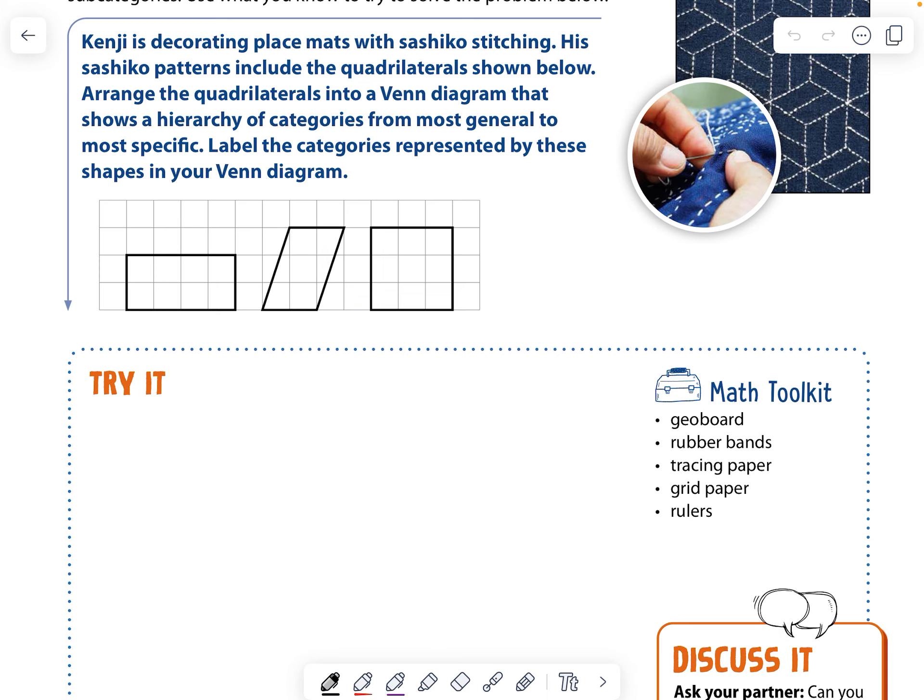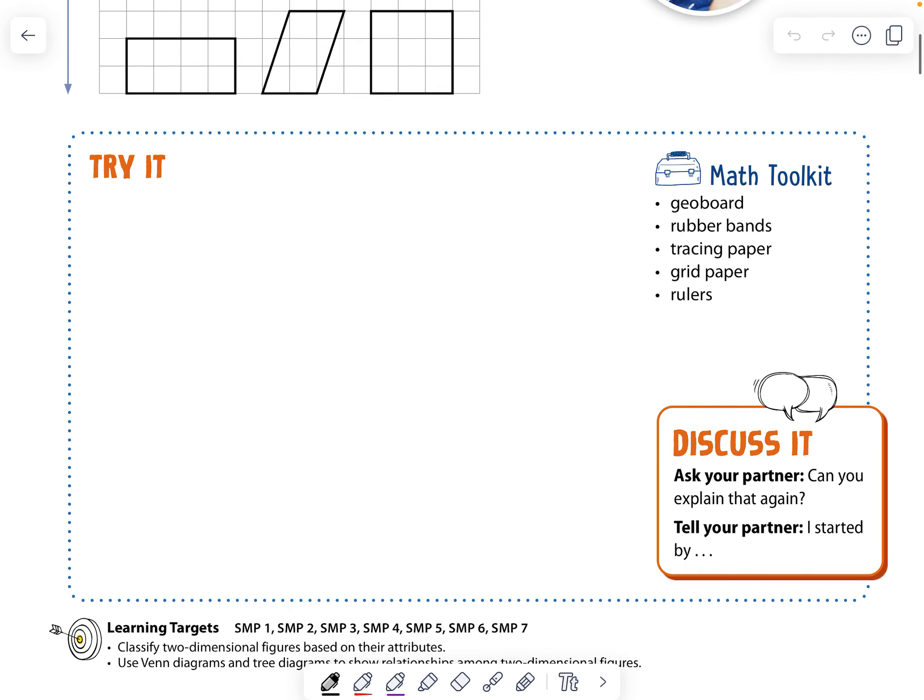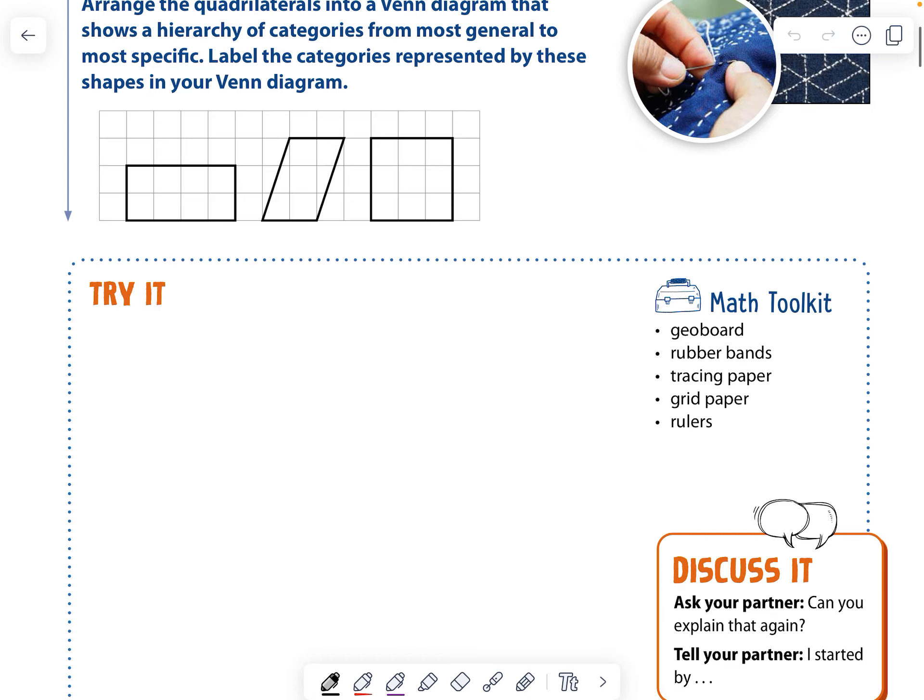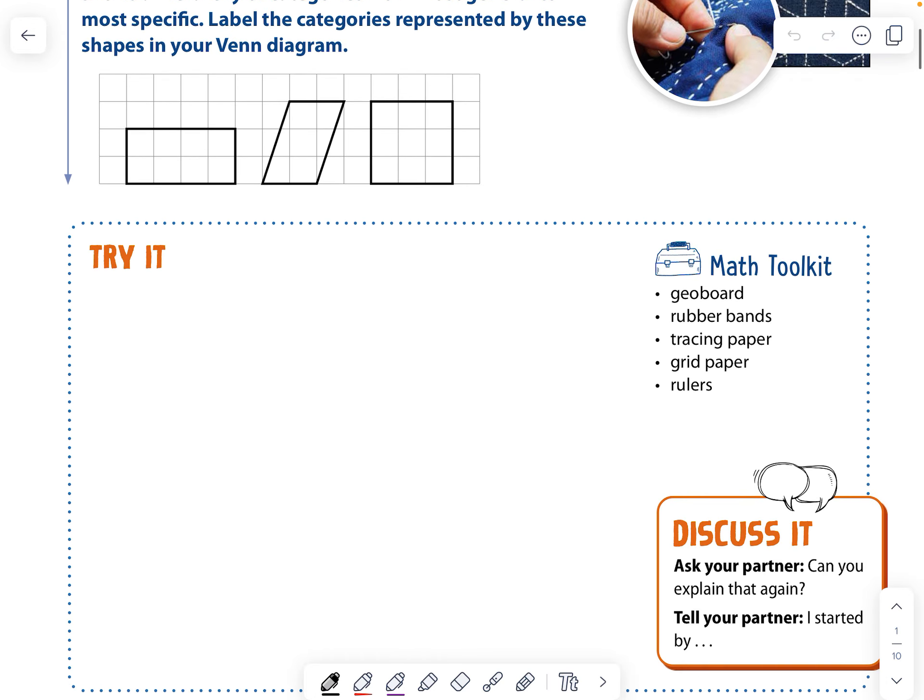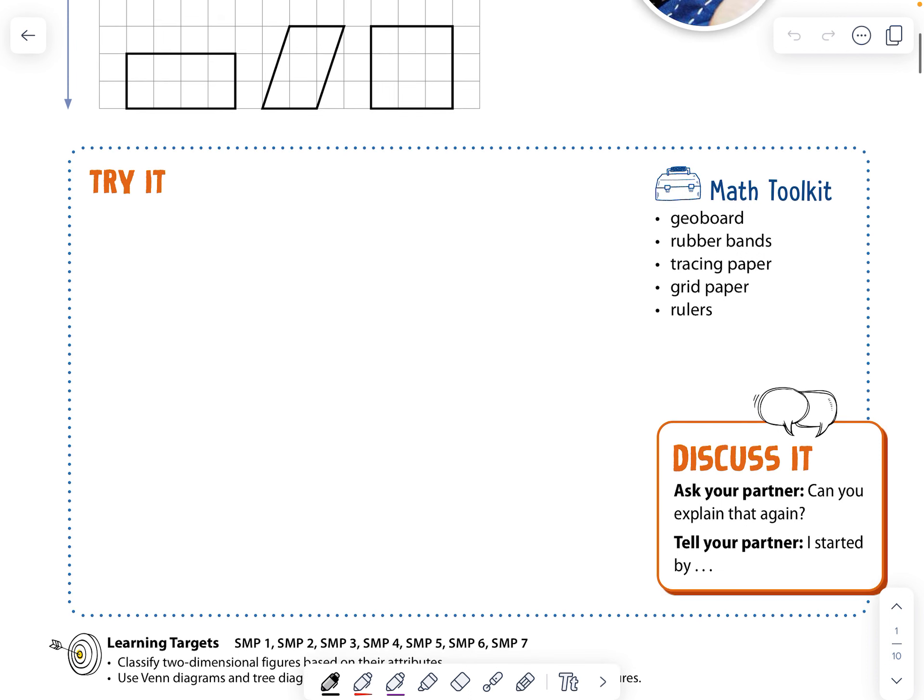So that one's going to be our most general one because if we look at all of them, all of these have parallel lines. So you can do a square. You can do a box. All right, well that's the same thing.